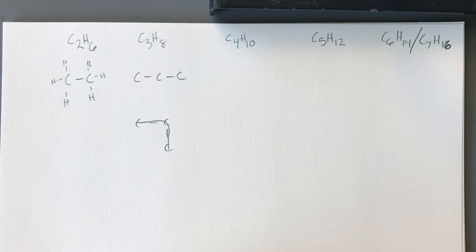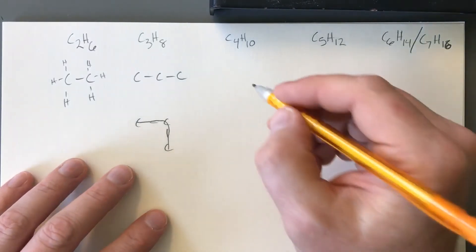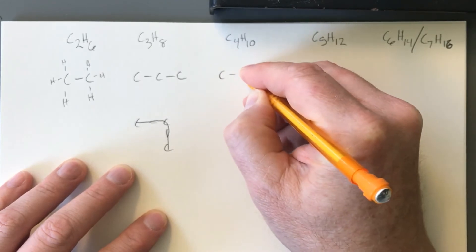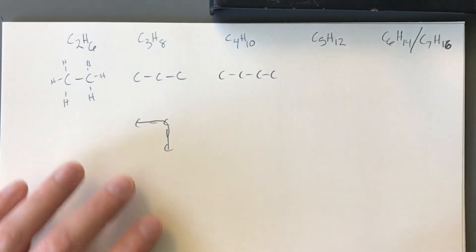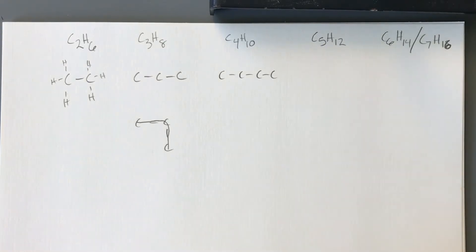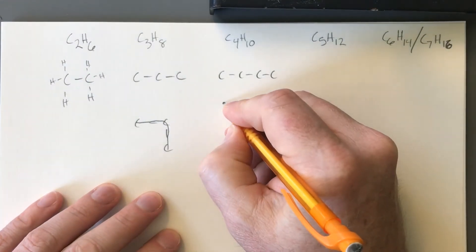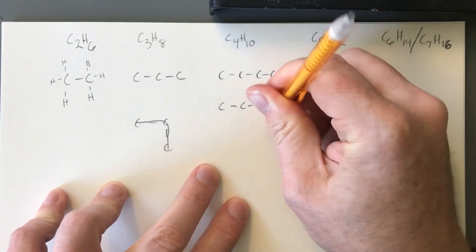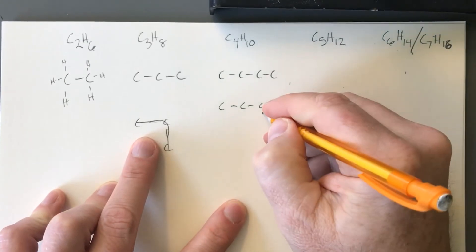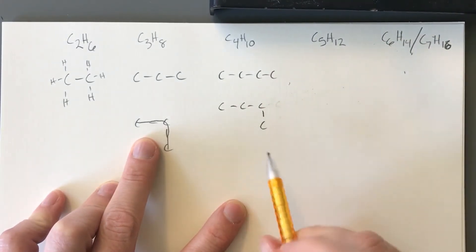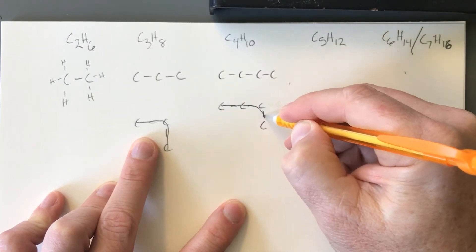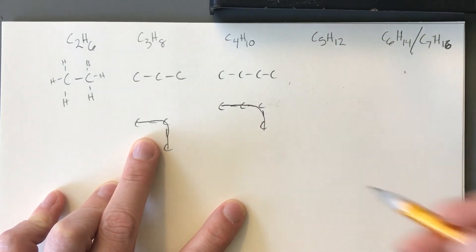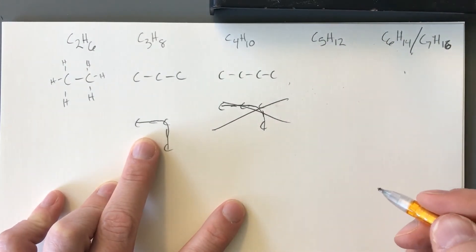The only way you can have an isomer is if you have something structurally different — where you'd have to take your pencil off or backtrack to reach the other atoms when tracing the longest parent chain. Looking at C4, the easiest approach is always to draw the basic parent chain first: four carbons in a row. If I then try to put one off the end, that doesn't work because I can still trace all the way through without releasing or backtracking, so that's not a new isomer.